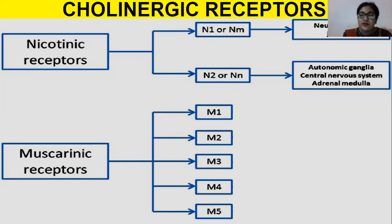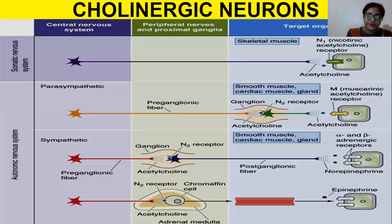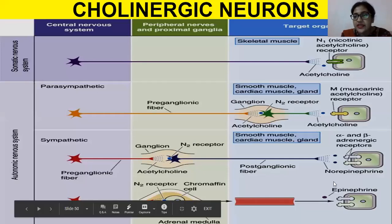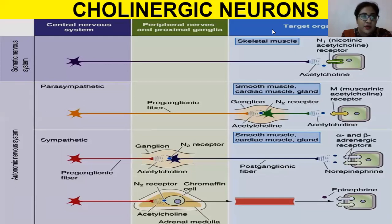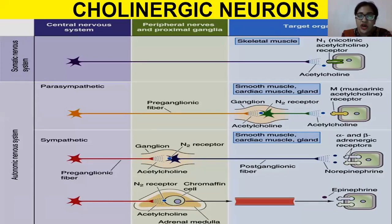M1, M3, and M5 have excitatory effects, and M2 and M4 have inhibitory effects. Looking at the slide, muscarinic receptors are present only in the parasympathetic division — not in somatic, not in sympathetic. They innervate the post-ganglionic end of the parasympathetic system, where they receive messages from acetylcholine.